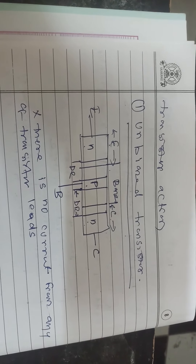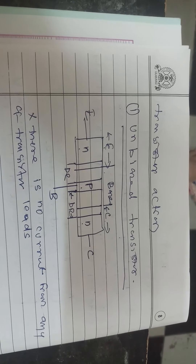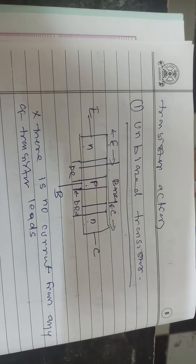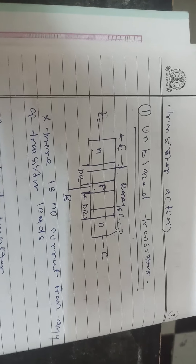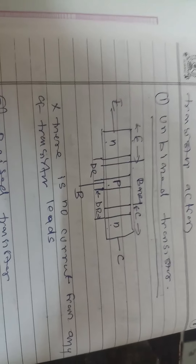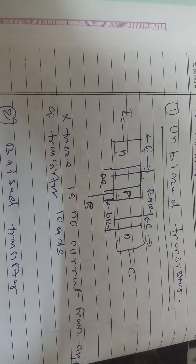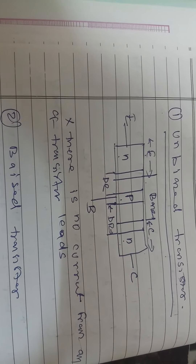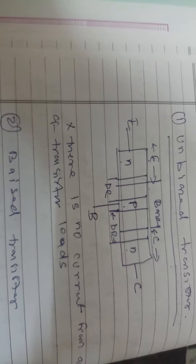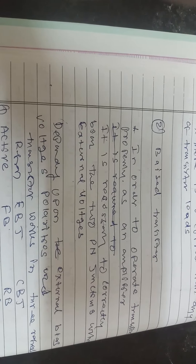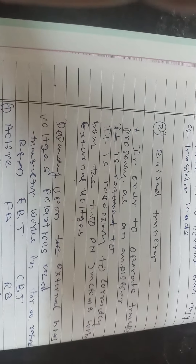Nothing is connected to the emitter, base, or between base and collector. So there is no current flowing through any transistor leads because of the absence of external voltage or bias. Biasing is required to stabilize the transistor and give faithful operation as an amplifier. In the biased transistor, a low signal has to be amplified — we must increase the magnitude of the input signal.